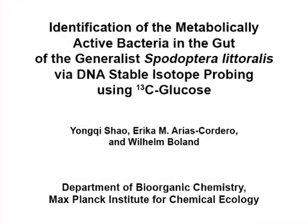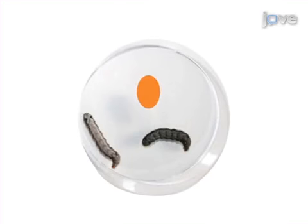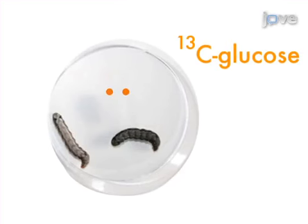The overall goal of the following experiment is to detail an efficient methodology employed to phylogenetically characterize the metabolically active bacteria in the gut of an insect. This is achieved by first feeding C13-labeled glucose to the insect to isotopically enrich the DNA of the metabolically active bacteria in their gut.